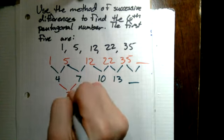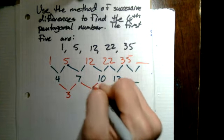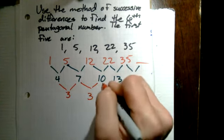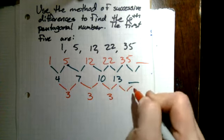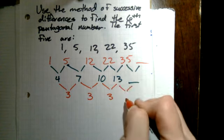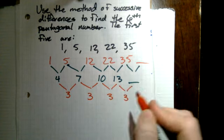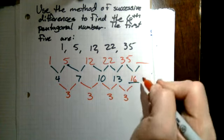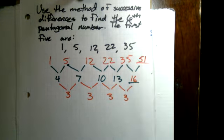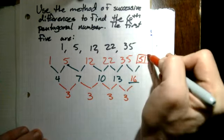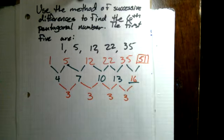7 minus 4 is 3, 10 minus 7 is 3, 13 minus 10 is 3. So whatever the difference is between this number and 13, it's got to be 3. Well, 13 plus 3 then is 16. 35 plus 16 is 51, which matches the number we found using the formula for pentagonal numbers.